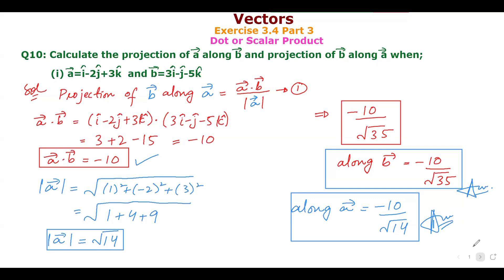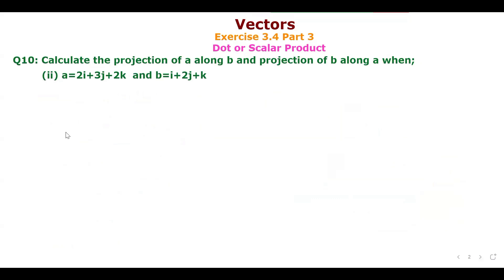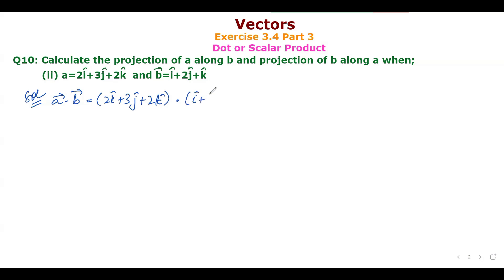Now solving part 2 of question 10. Vector A = 2i + 3j + 2k, vector B = i + 2j + k. First find A·B: dot product = (2)(1) + (3)(2) + (2)(1) = 2 + 6 + 2 = 10. So A·B = 10.